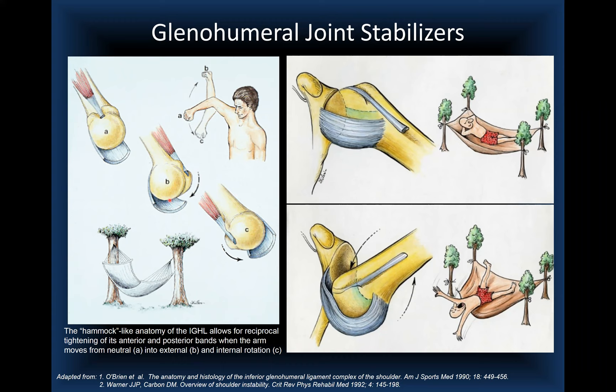The hammock-like anatomy of the inferior glenohumeral ligament allows reciprocal tightening of the anterior and posterior bands as the arm moves from neutral to external rotation to internal rotation. In neutral, the inferior glenohumeral ligament complex is located inferiorly, holding the humeral head like a hammock. In external rotation it moves anteriorly; in internal rotation it moves posteriorly, acting like a check rein against dislocation.